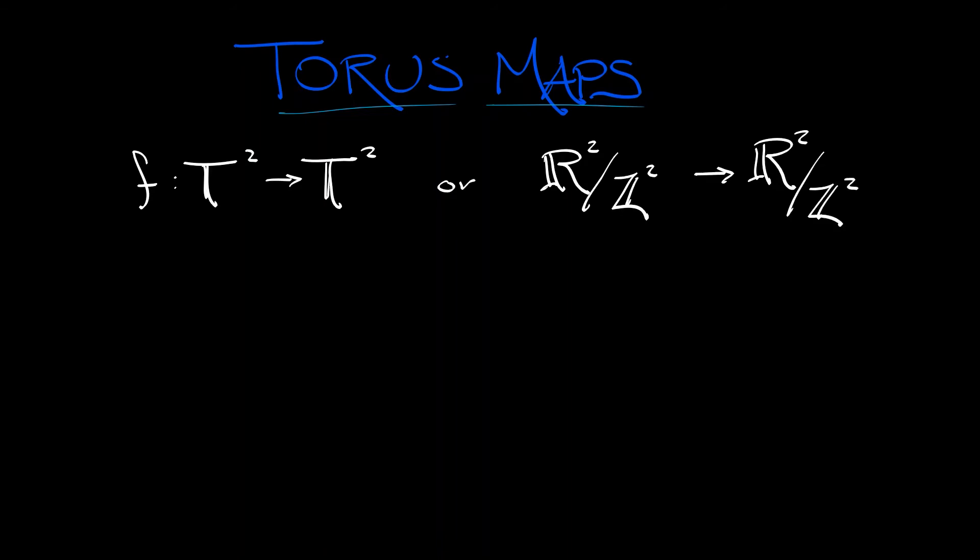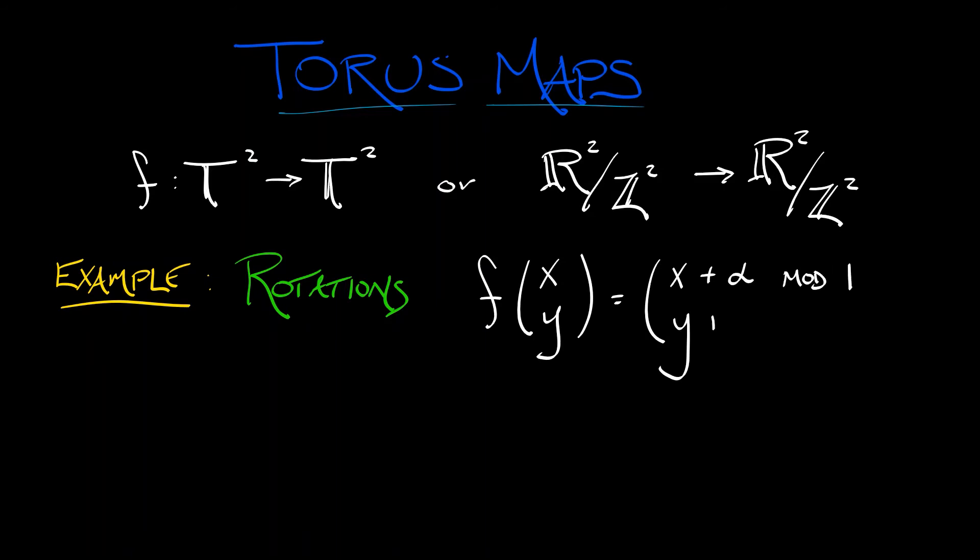So a simple example that generalizes things that we saw with circle maps is rotations, where this function f takes the two inputs, x and y, either on the plane or thought of as angles, to x plus a constant alpha mod 1, and y plus a constant beta mod 1. We're doing both of these mod 1 to respect the fact that we're on a torus.